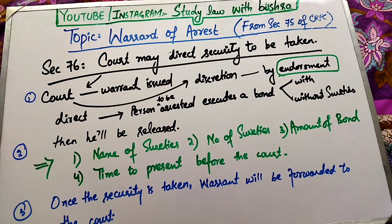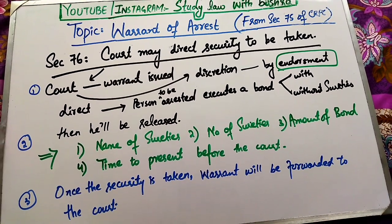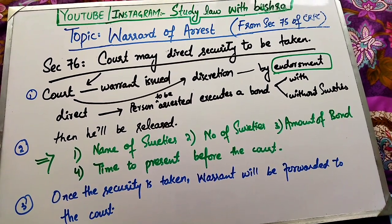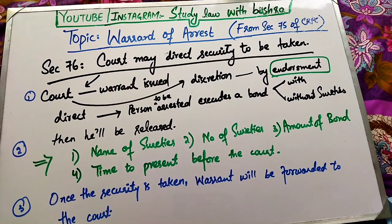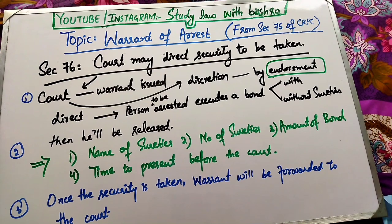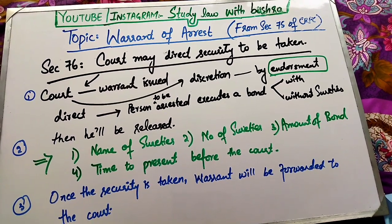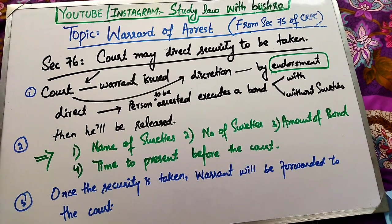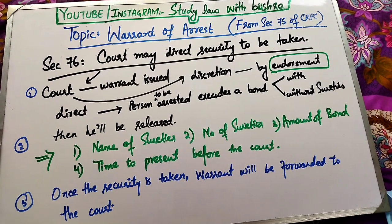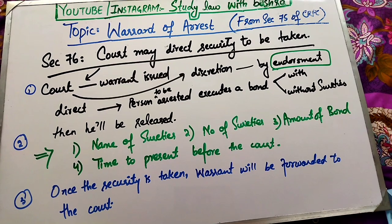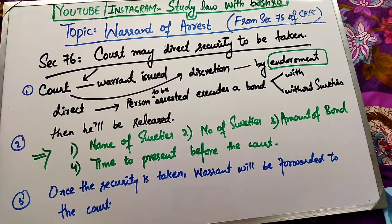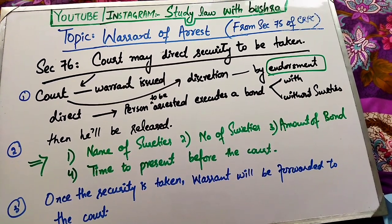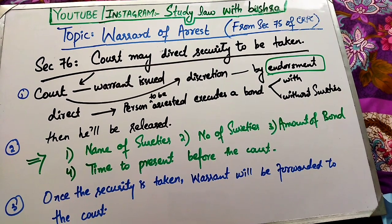Next آتا ہے section 76 — Court may direct security to be taken. اس میں بتایا گیا کہ کوئی بھی court جو warrant issue کر رہی ہے، وہ اپنی discretion استعمال کرتے ہوئے ایک endorsement کے through بتائے گی کہ اگر وہ بندہ زمانت دے دیتا ہے تو اسے release کر دیا جائے گا. Endorsement پر sureties کے نام اور ان کی numbering لکھی جائے گی.